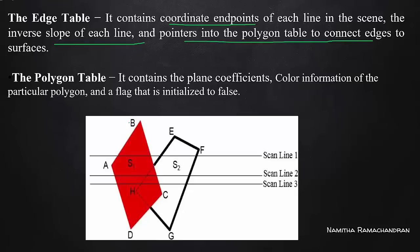We have to use two endpoints — A, B and each particular edge: AB, BC, CD, AD. We have to store the edge information in the edge table, then the inverse slope of each edge, then pointers to the polygon table. In the polygon table, we store the surface coefficients — S1 surface coefficients, S2 coefficients — as well as intensity information and flag values.